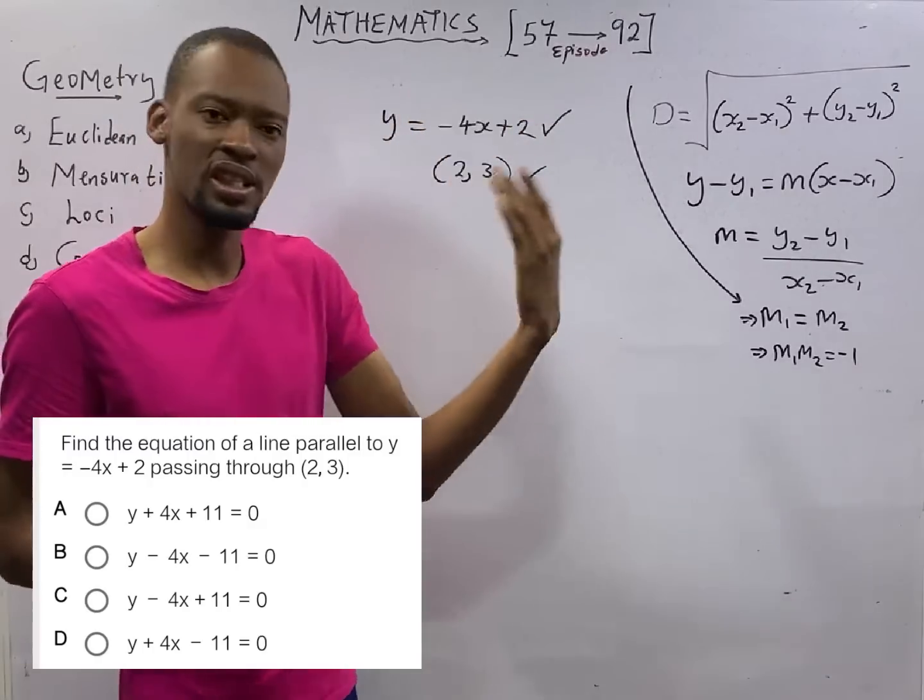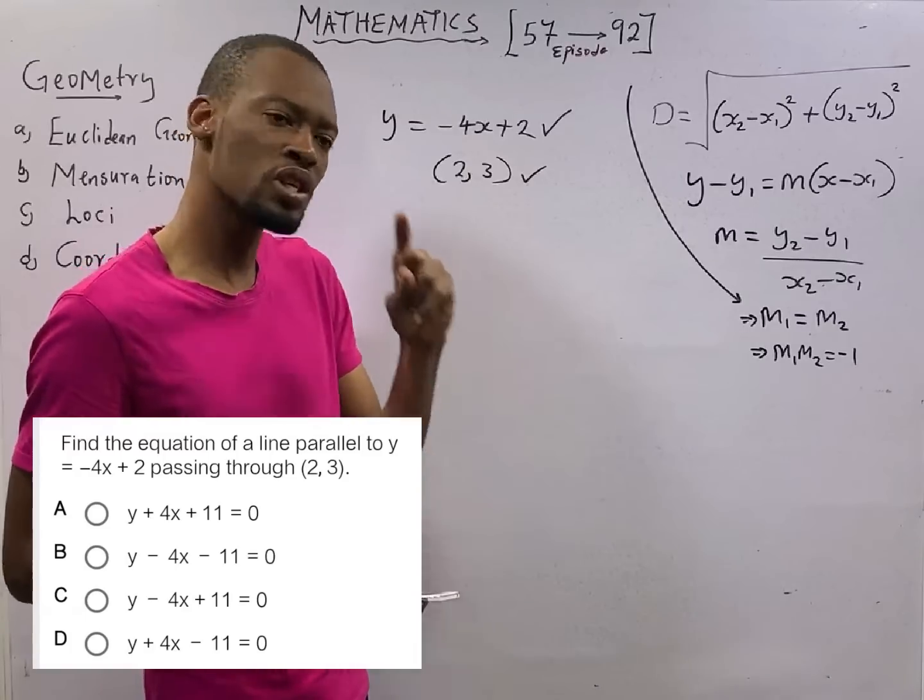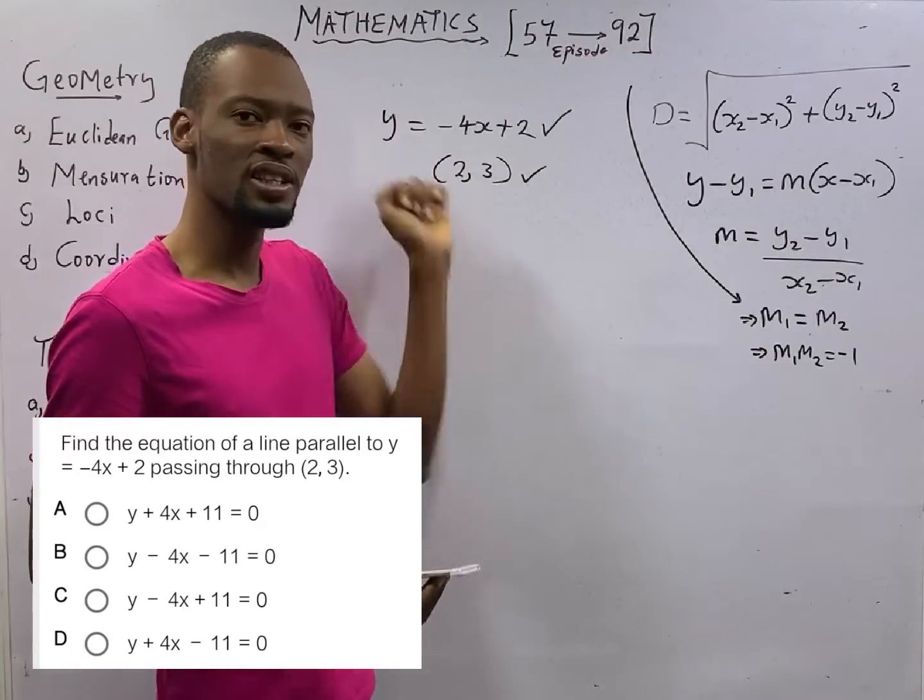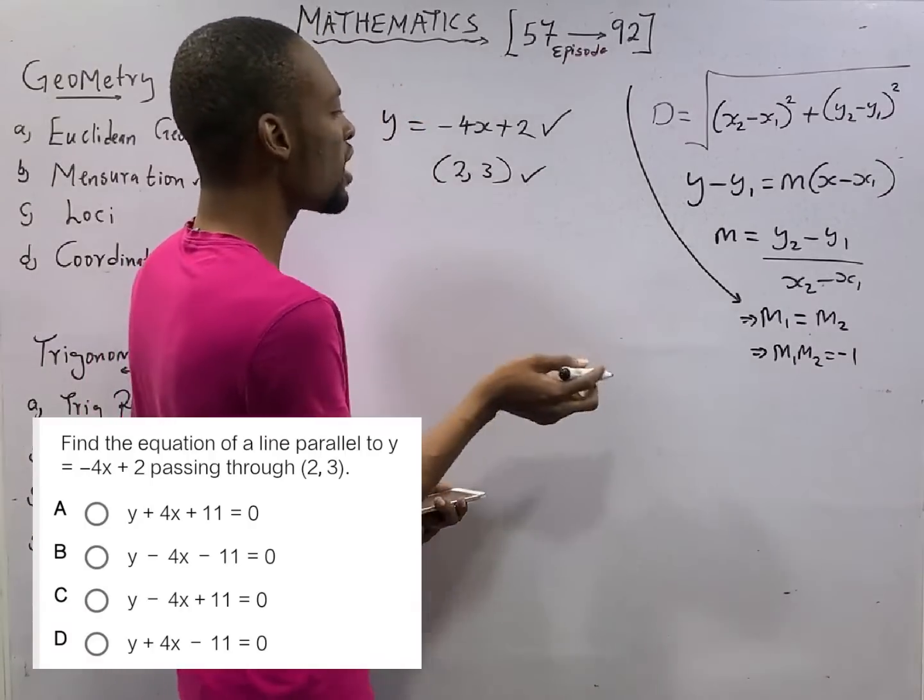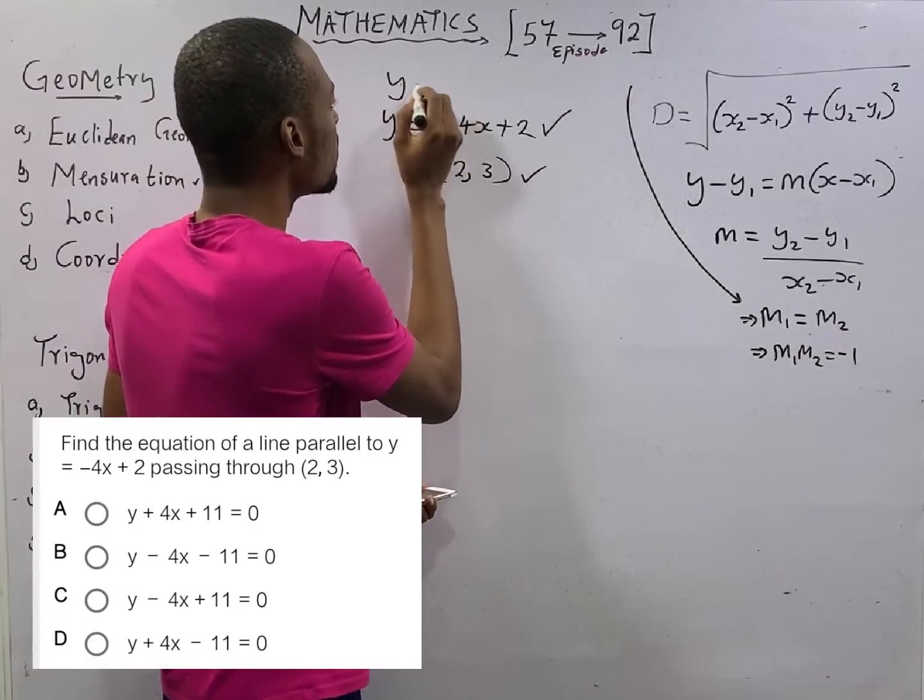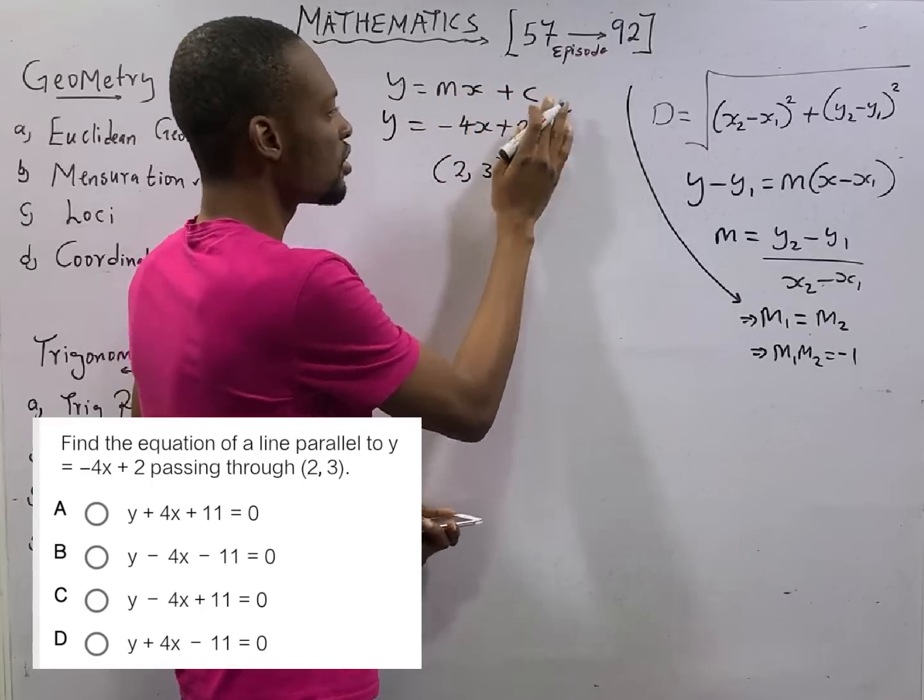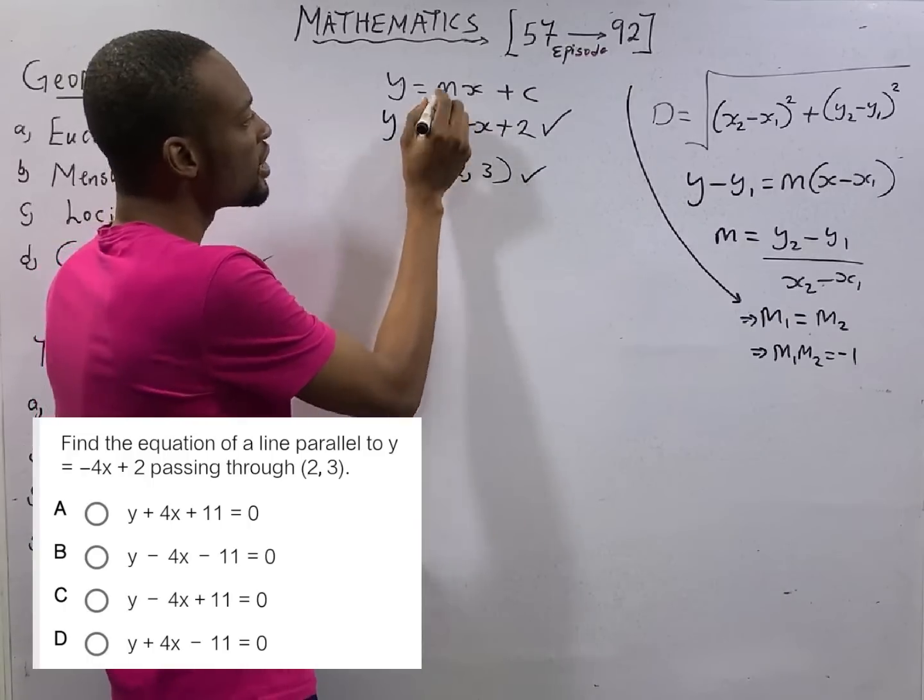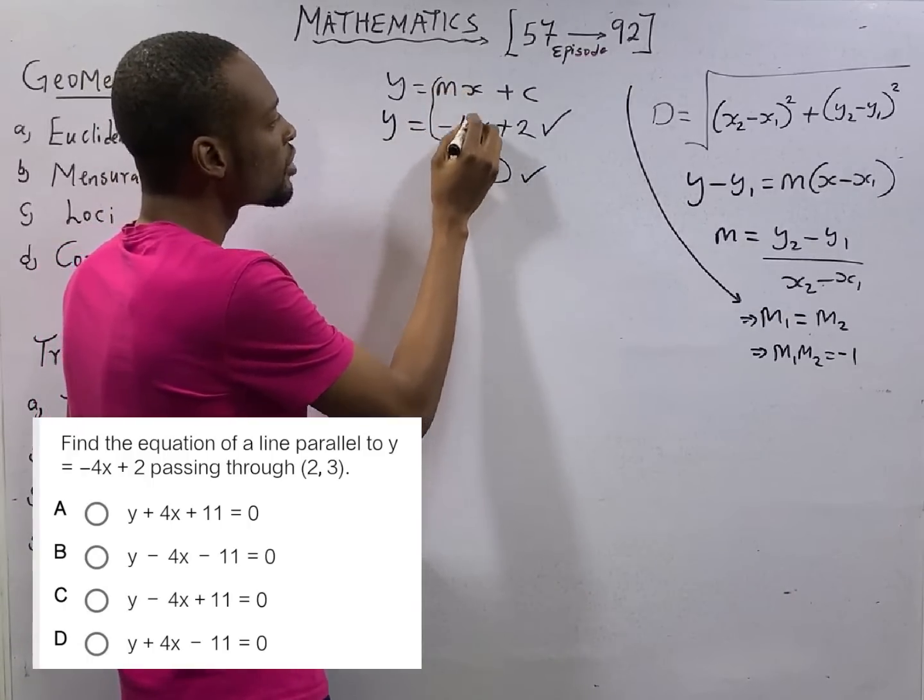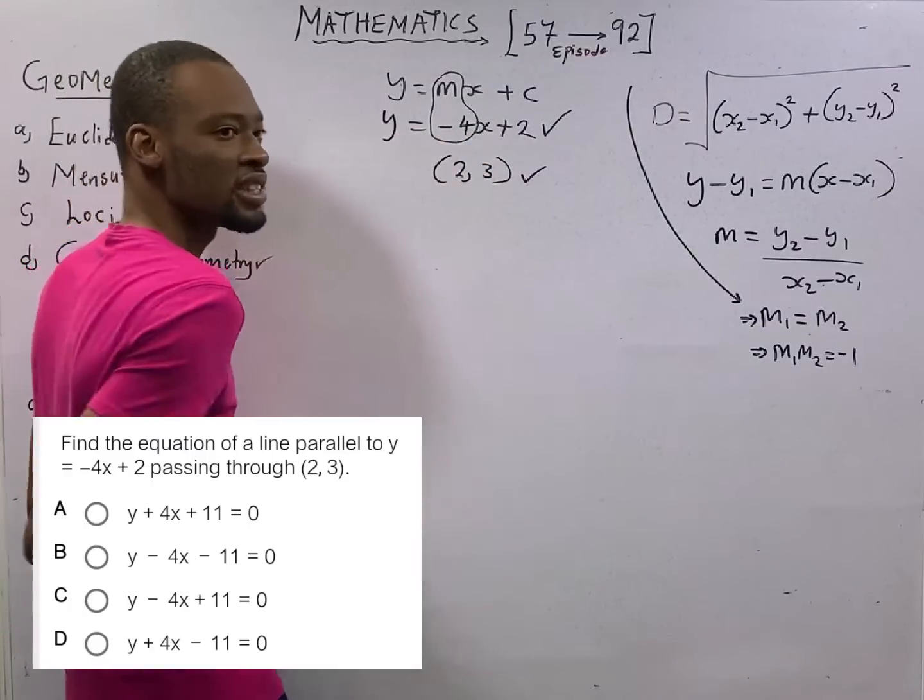They will just give you equation containing x, y and constant. It is your duty to always make y subject of formula in equation of line. By the time you make y subject of formula, you will arrive at something like y equals mx plus c. So what is in front of x after you make y subject of formula is your gradient.